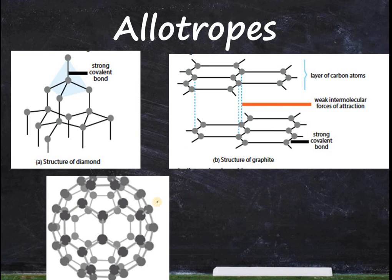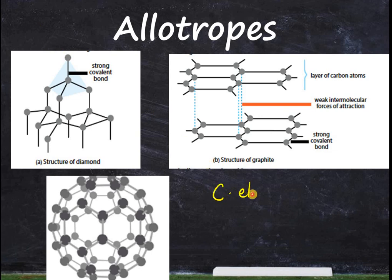And then there is fullerene — C60 — where sixty carbon atoms are combined together. So all three are the same carbon element, but they are completely different from each other because of how the atoms are arranged.